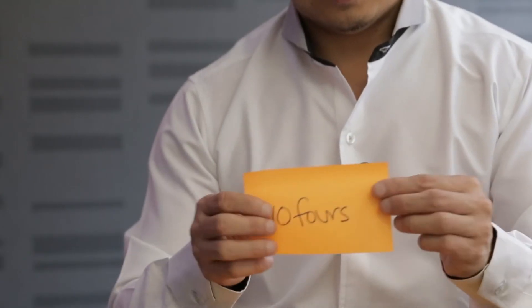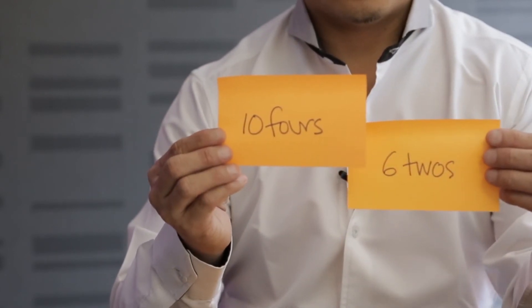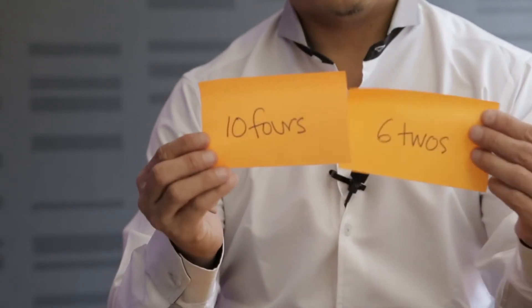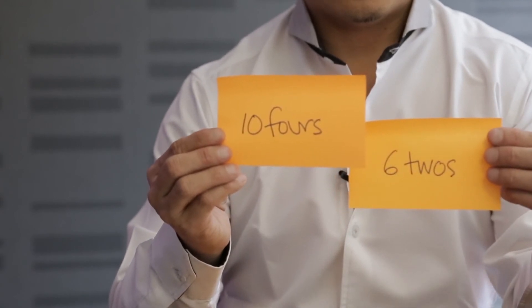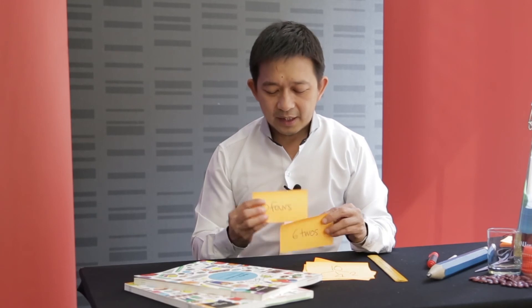So if you see 52 as 10 fours and 6 twos, and you want to divide this by 4, it's really not that obvious — 10 fours divided by 4, or 6 twos divided by 4, it's really not that convenient. The way you want it is really perhaps 40 and 12. But here you have a student who offered a response that is unexpected — not incorrect, but unexpected and may not lead to the solution easily.